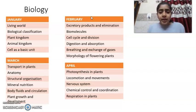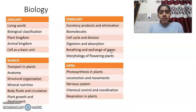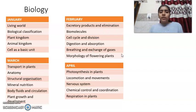In February, you have to do Digestion and Absorption, Breathing and Exchange of Gases, Biomolecules, Cell Cycle and Cell Division, Excretory Products and Elimination, and Morphology of Flowering Plants. These are the chapters to complete in February.